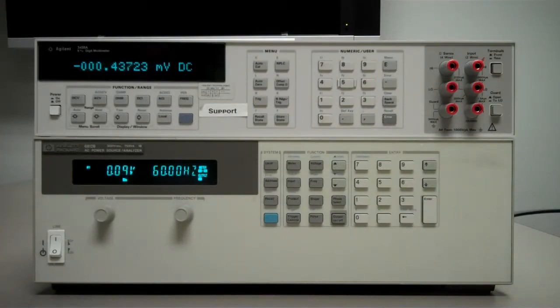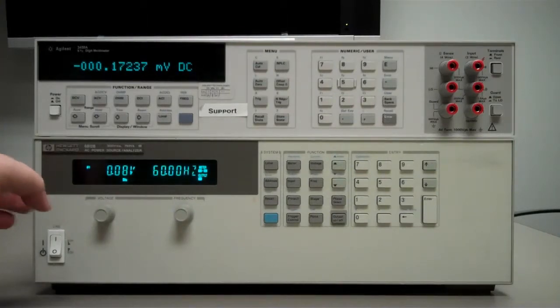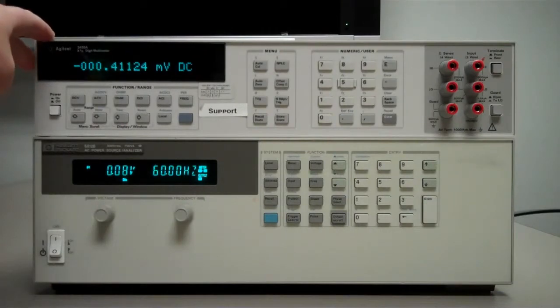What you see here are two instruments. The bottom instrument is my 6812B AC source and the top instrument is my 3458A multimeter.